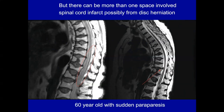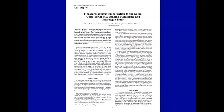Some patients will have disease in two compartments. This is a 60-year-old who suddenly became paraparetic. There is abnormal signal in the lower thoracic cord, and there is a disc herniation as well. In some cases of spinal cord infarcts, autopsy has found fibrocartilaginous material within a spinal artery, presumably arising from a disc herniation that embolized to the spinal artery. Some spinal cord infarcts are actually from aortic dissection, so you need to be looking at the aorta at the same time.